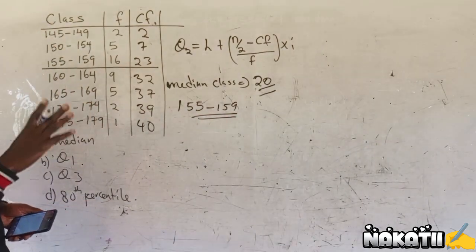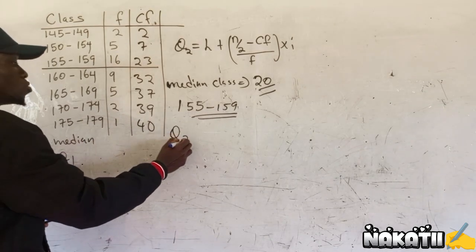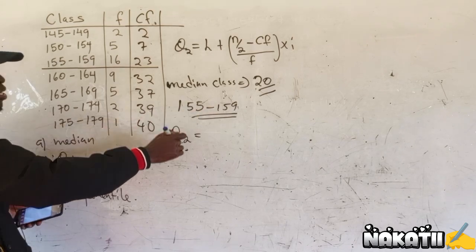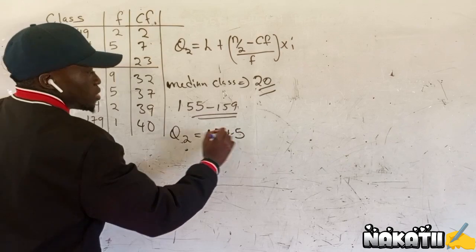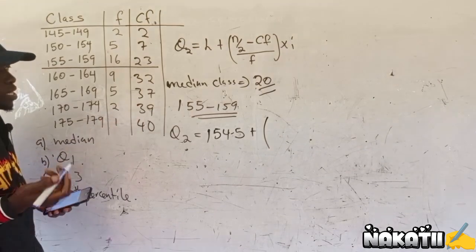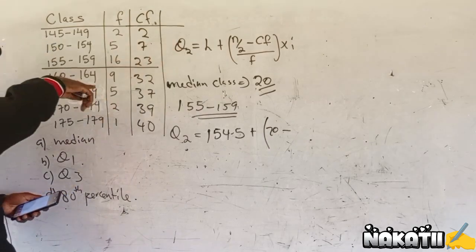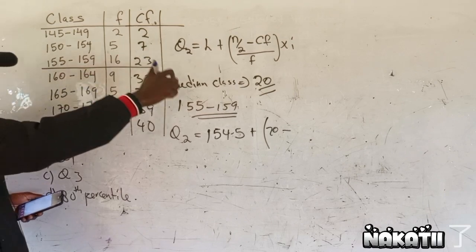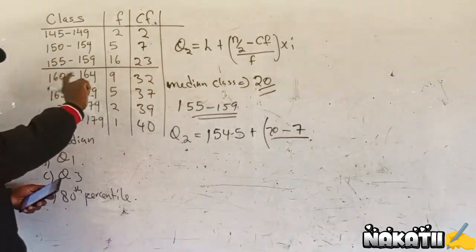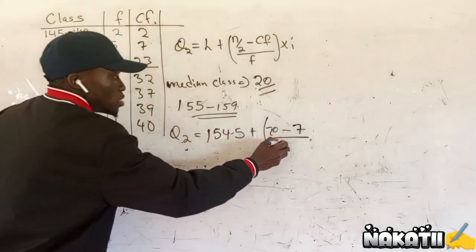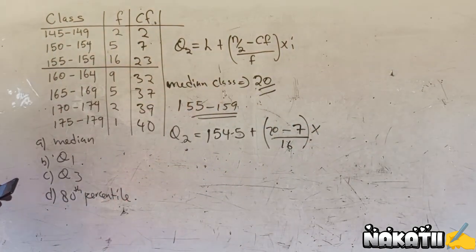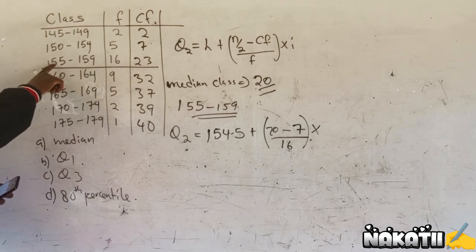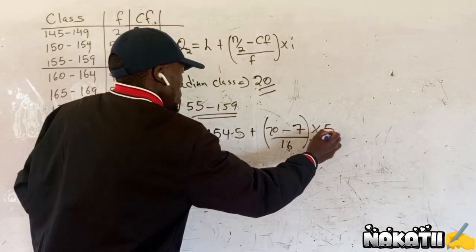After getting the median class, you go back to the formula: Q2 equals L, the lower limit of the median class, which is 154.5, plus N divided by 2, that is 20, minus CF — the cumulative frequency above the median class, which is 7 — divided by frequency of the median class, which is 16, multiplied by the class interval. The class interval is 159.5 minus 154.5, which gives you 5.